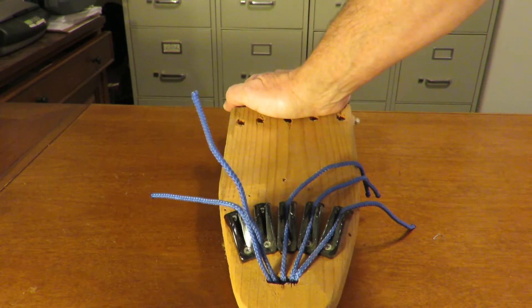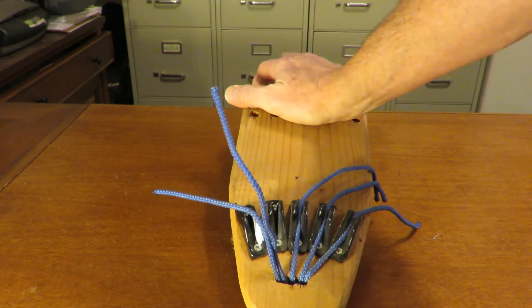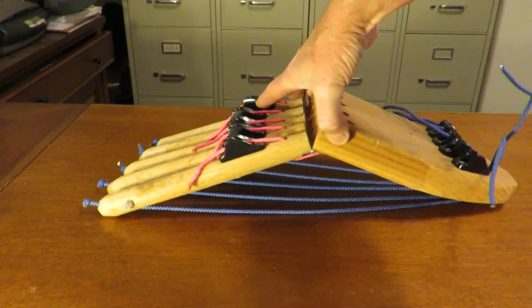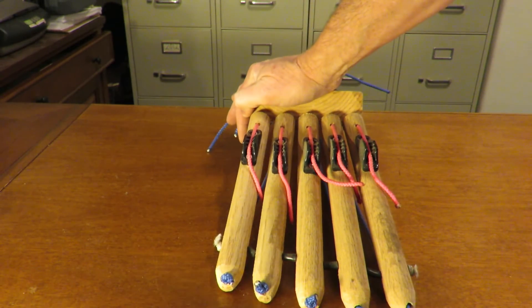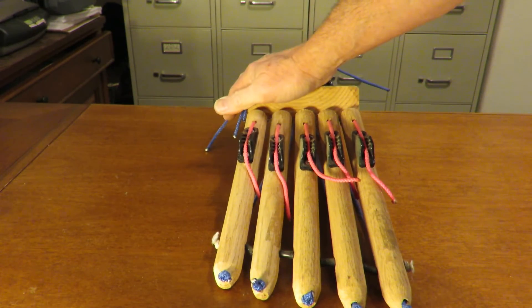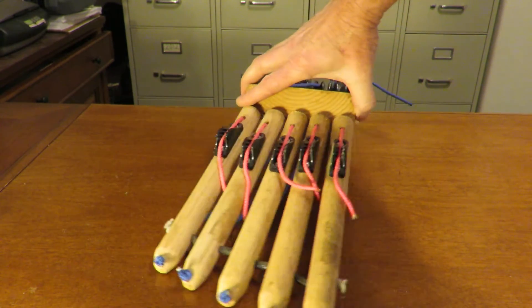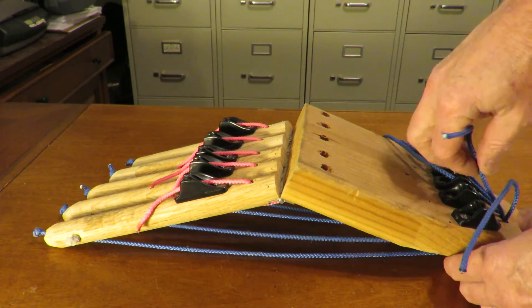If we load that up again, instead of wanting to be stable, it tends to want to evert the calcaneus because no longer is the plantar fascia tight on the medial aspect, which creates that medial column stability that we need in order to prevent the foot from overpronating.